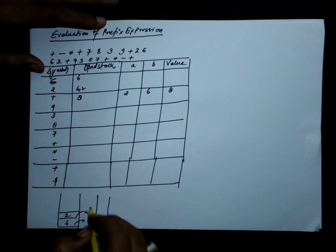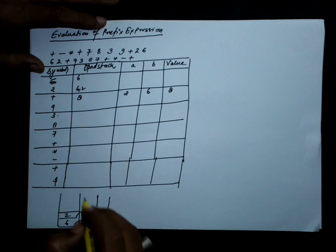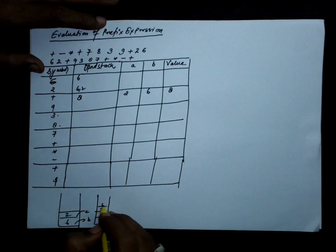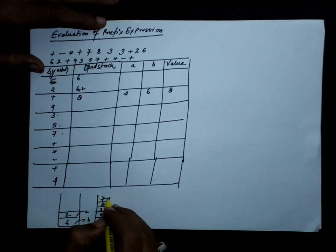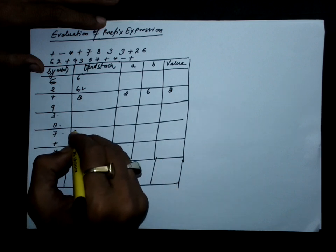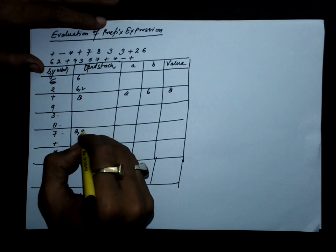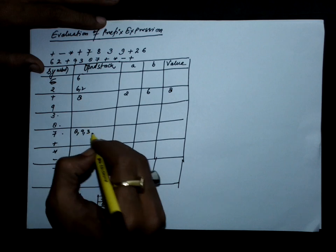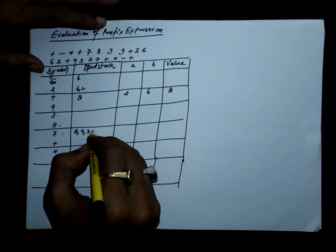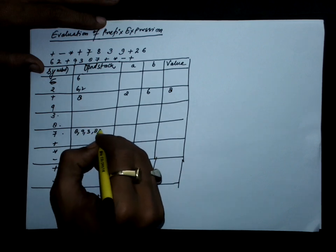Then I have 9, which is an operand, so push it on the stack. 3 is again an operand — push it. 8 is an operand — push it. 7 is an operand — push it. So the condition of the stack is: 8, 9, 3, 8, and 7.